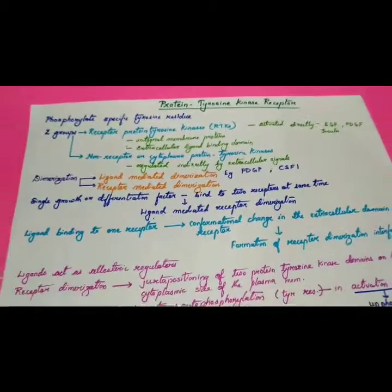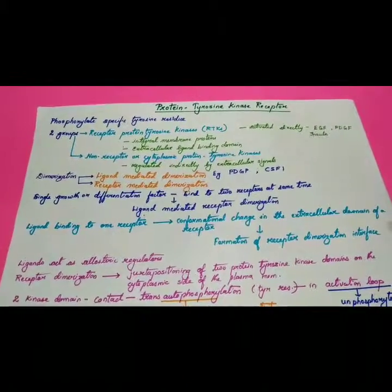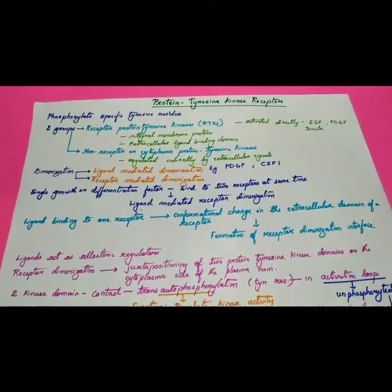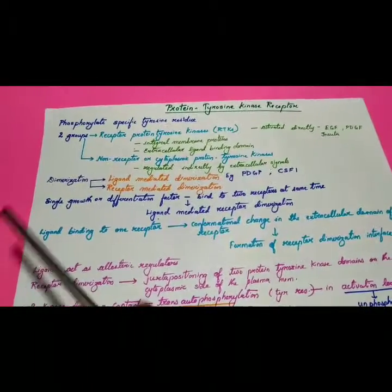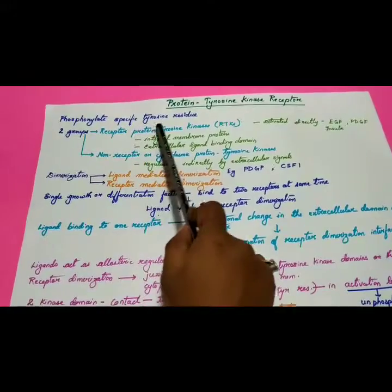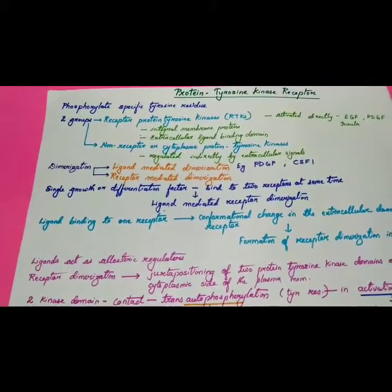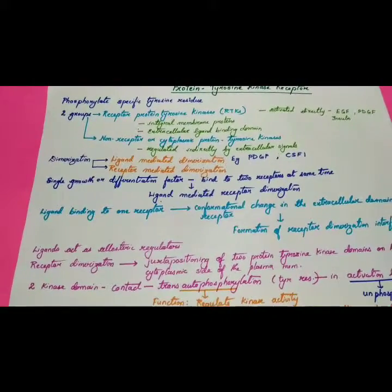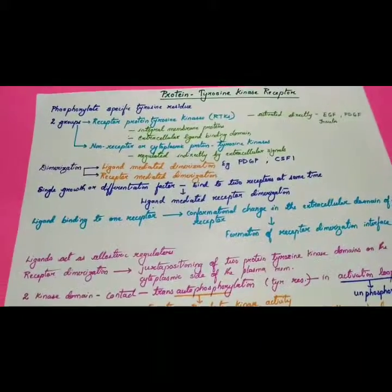Welcome to Grow with Biology. Today's topic is protein tyrosine kinase receptor, which is a type of cell signaling receptor. Protein tyrosine kinase phosphorylates specific tyrosine residues — it adds a phosphate group to tyrosines present in the protein molecule.